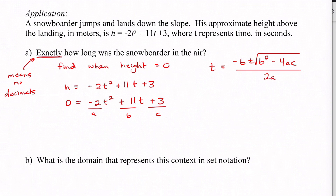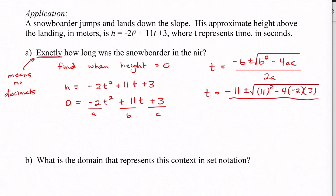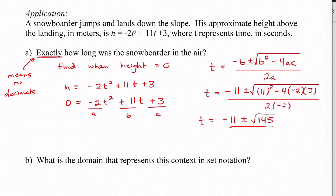Starting with the function h = -2t² + 11t + 3, we change that height to be zero. I can see a is negative 2, b is 11, and c is 3. Writing the quadratic formula and plugging in: minus b is minus 11, plus or minus, b² is 11 squared, minus 4 times a (negative 2) times c (3). In the denominator, 2 times a, which is negative 2. Simplifying inside the radical, I get 145, and the denominator is 2 times negative 2, which is negative 4.